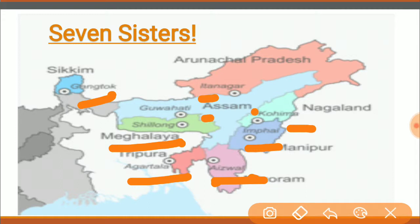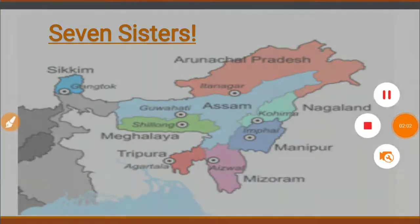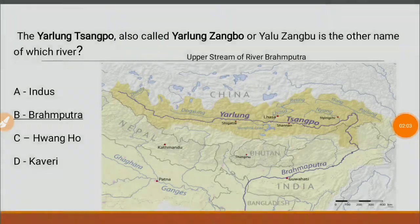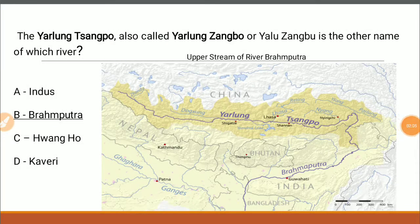The last state is Assam, whose capital is Guwahati. Many times people will try to confuse you by saying it's Dispur, but the capital of Assam is Guwahati.